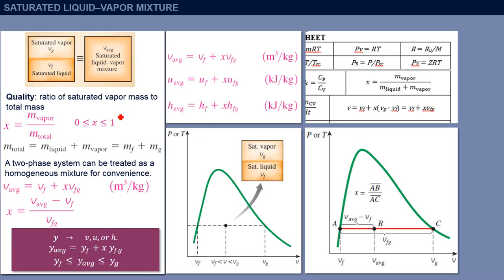When we are calculating properties of this mixture, the important thing is to know what is the amount of vapor and what is the amount of liquid there. Therefore, we define a property called quality.